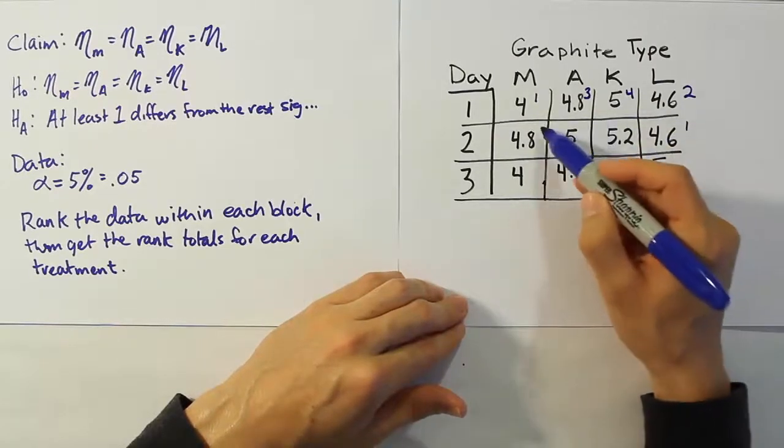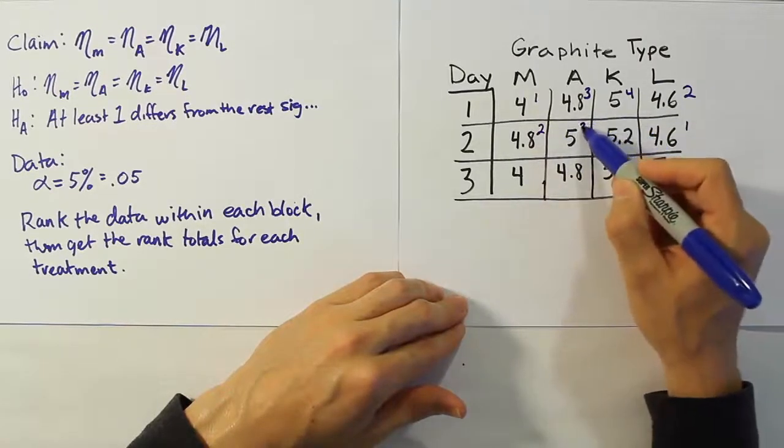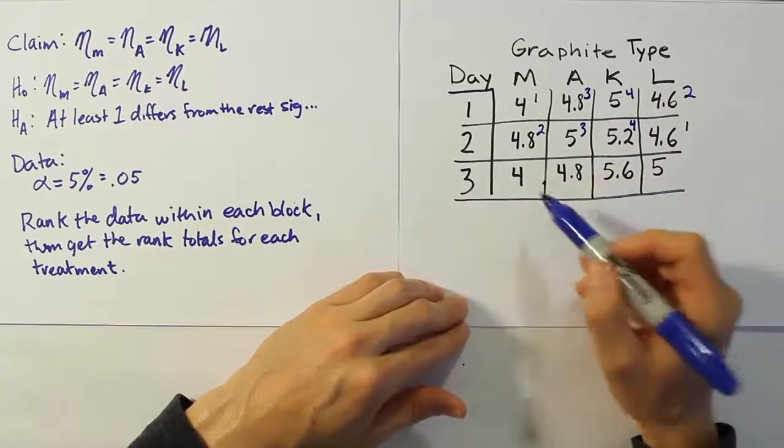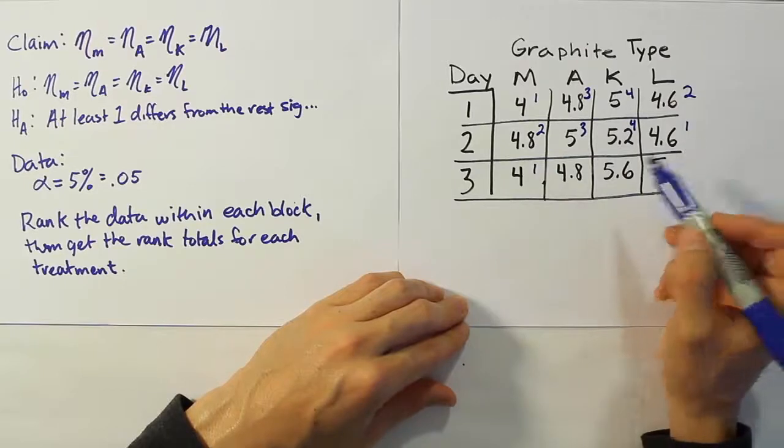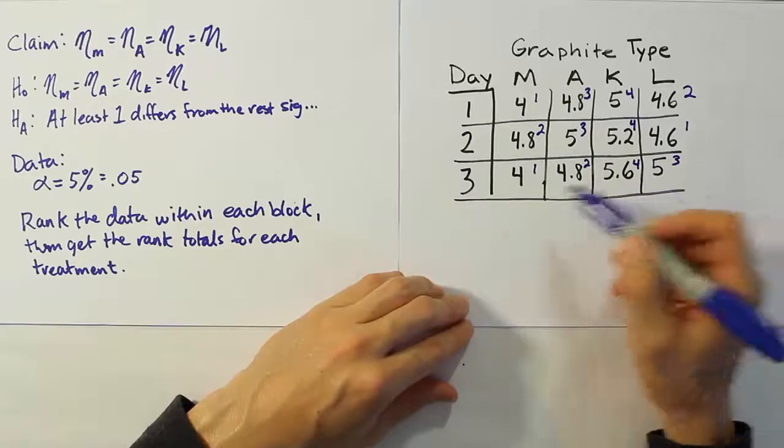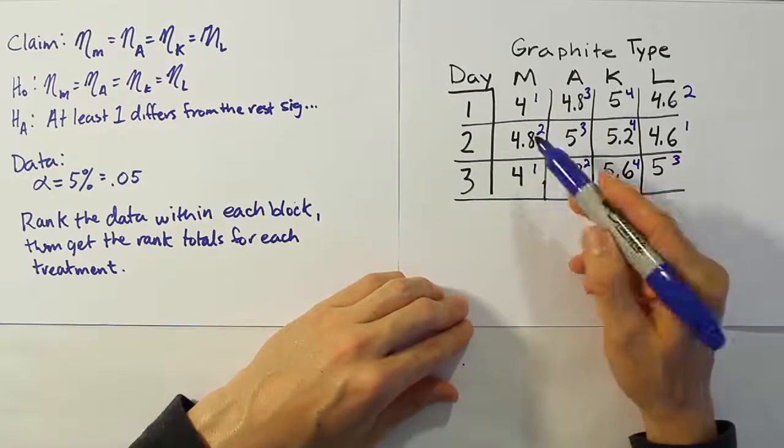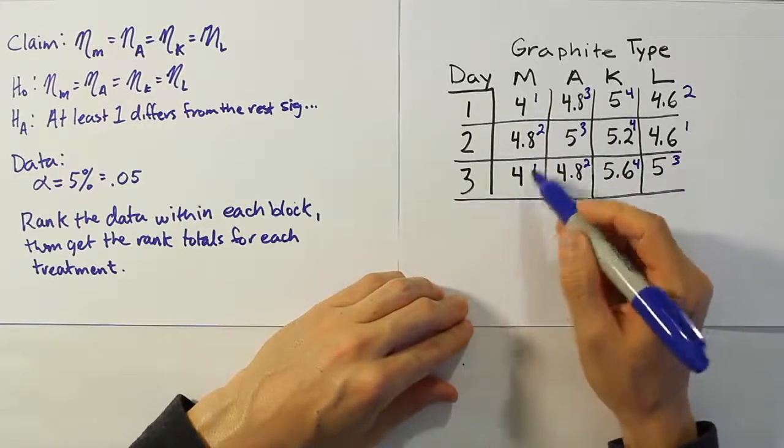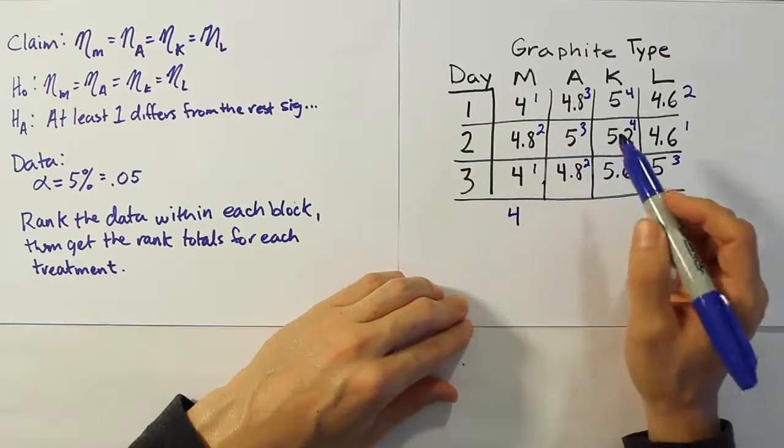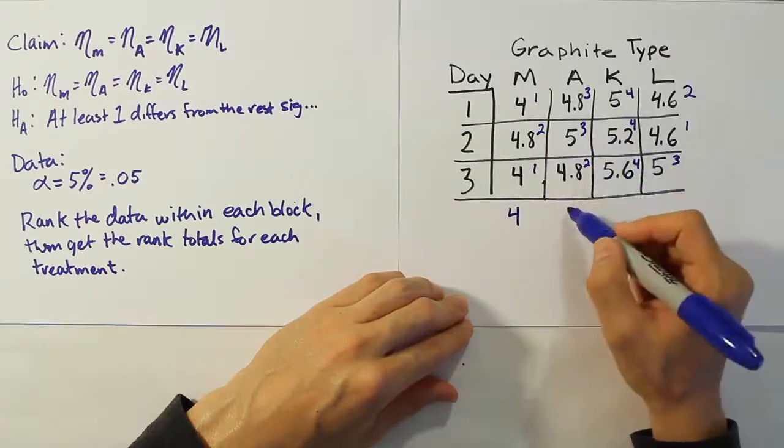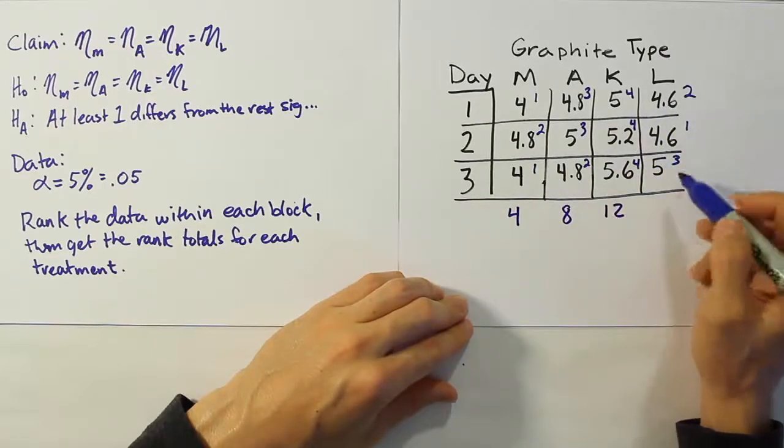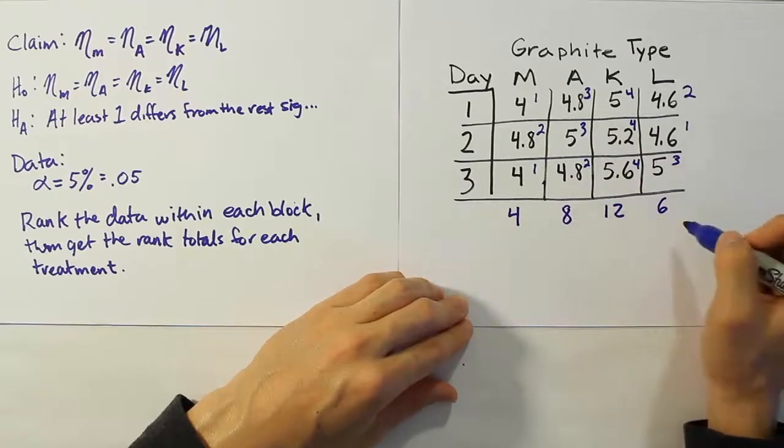Then this will be rank one, two, three, four, right? And then we'll go down to here, and we have rank one, rank two, rank three, rank four. And now we're done. From there, we want to get the totals now. So the rank total for M, so the first guy's total will be one plus two plus one, which is four. Three and six and two more is eight. Four, four, and four makes twelve. And two and three and three makes six. So those are our rank totals.